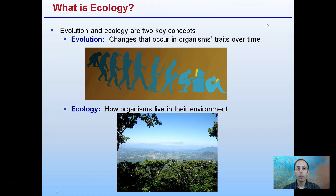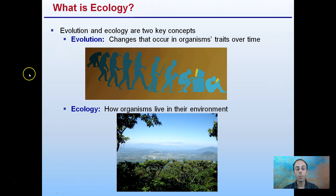What is ecology? Evolution and ecology are two key concepts. Evolution refers to changes that occur in an organism's traits over an extended period of time. Ecology is how the organism lives in their particular environment. Keep in mind the separation of these two concepts.